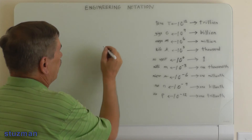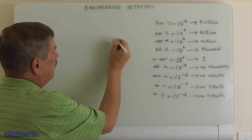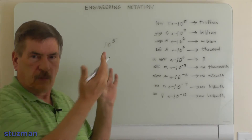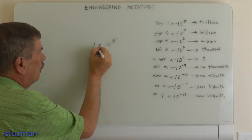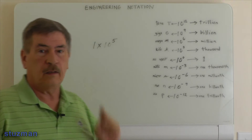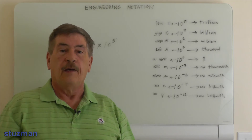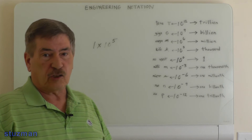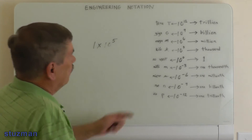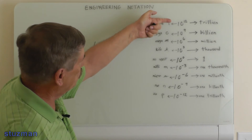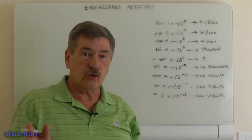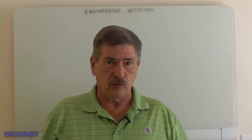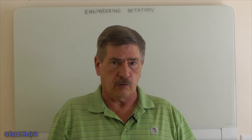A lot of times you'll see numbers by themselves, like 10 to the fifth with no other number in front of it. It is understood that there is a one in front of it. Usually you'll just drop the one and write the base number and the exponent. So a lot of times you'll see that — the one times is understood to be there.